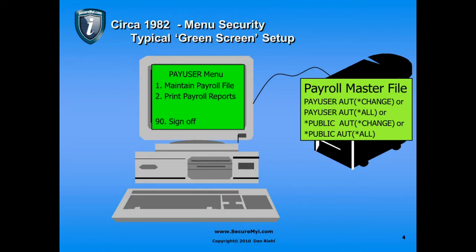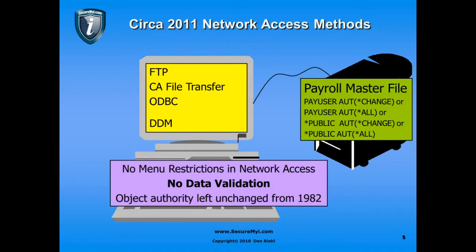Switch over now to circa 2011, when network access methods are in place — FTP, Client Access file transfer, ODBC, DDM, and a plethora of other methods to get to the data. When we use these methods, there is no menu restriction enforcing what data fields look like when going through a COBOL program. There is no data validation performed by these network tools — ODBC, DDM, FTP — no data validation. So I could set a state code to the value of XX, and that would be perfectly fine.